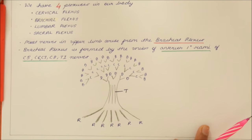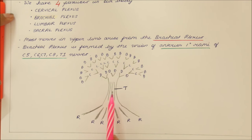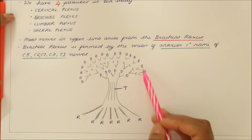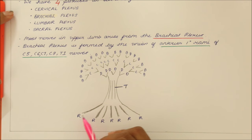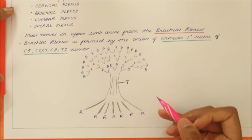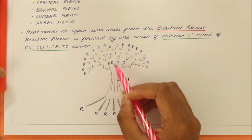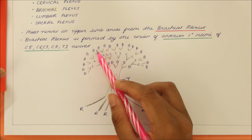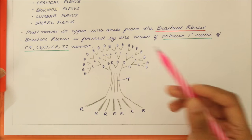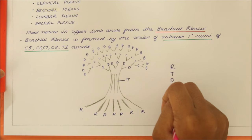Now let's look at the basic structure of the brachial plexus. It is basically like a tree — a tree has roots and trunks. In the brachial plexus it has roots, symbolized by R, then trunks, which are further divided into divisions (D), further into chords (C), and finally into branches. So we have roots, trunk, divisions, chord and branches.